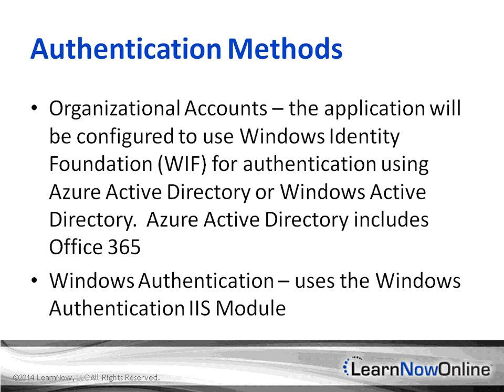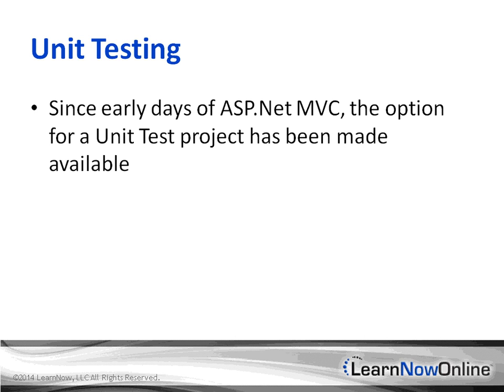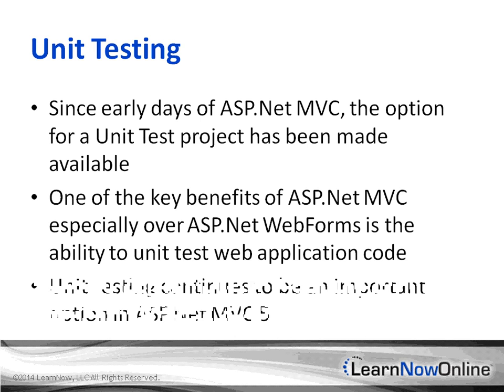Finally, there's Windows Authentication, which uses the Windows Authentication IIS module. You'll see this a lot in corporate environments where users are authenticated against the local Windows Domain Server. In the new project wizard, there's also an option to add unit testing to your application. Since the early days of ASP.NET MVC, the option to add a unit test project has been available, and one of the big benefits of MVC over Web Forms is the ability to unit test your web application code. Unit testing continues to be an important option in ASP.NET MVC 5.